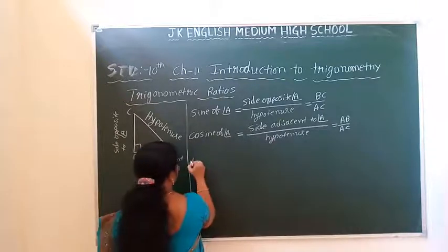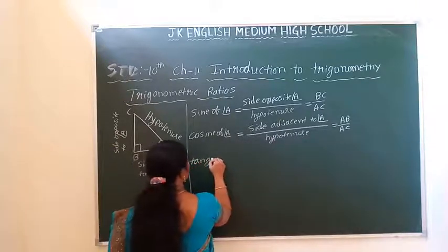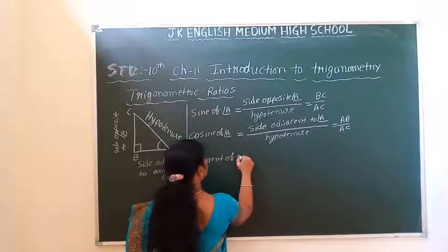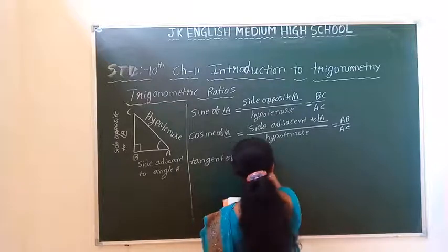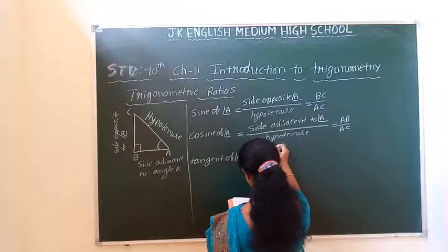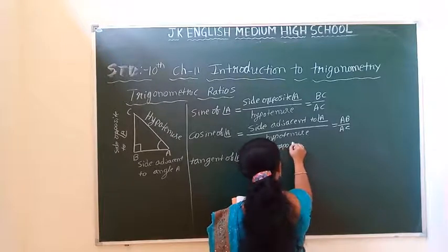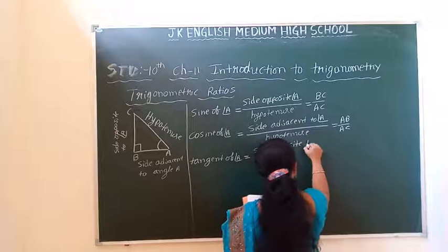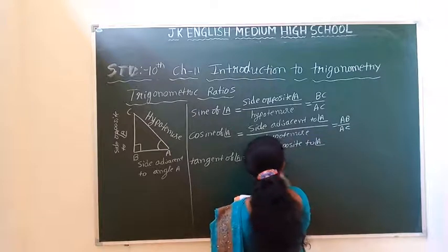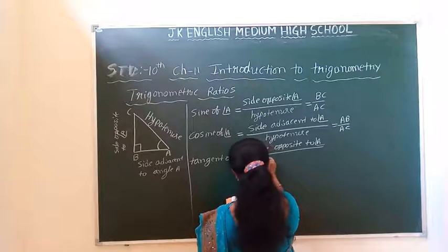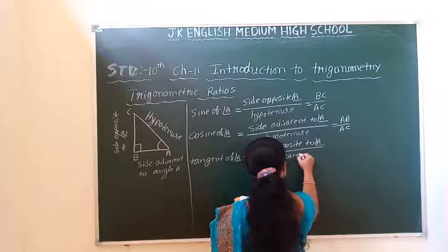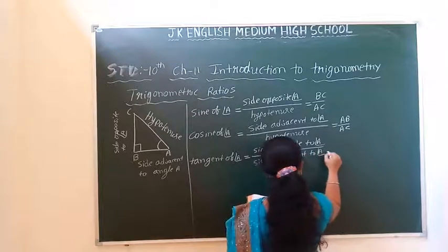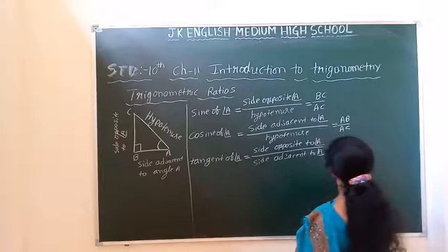Tangent of angle A is equal to side opposite to angle A divided by side adjacent to angle A. So the side opposite to angle A is BC, and side adjacent is AB, giving tangent A equals BC divided by AB.